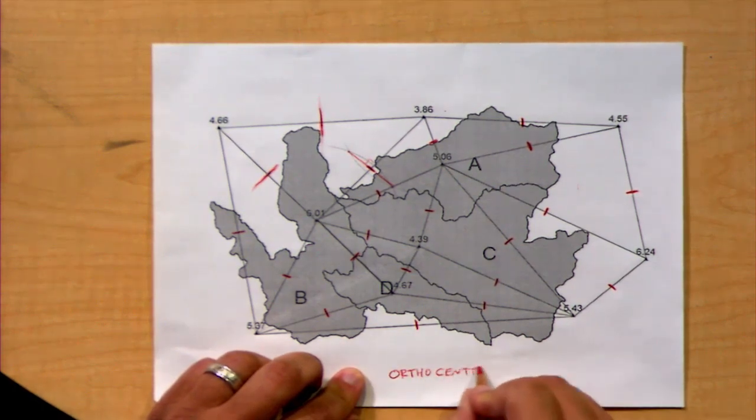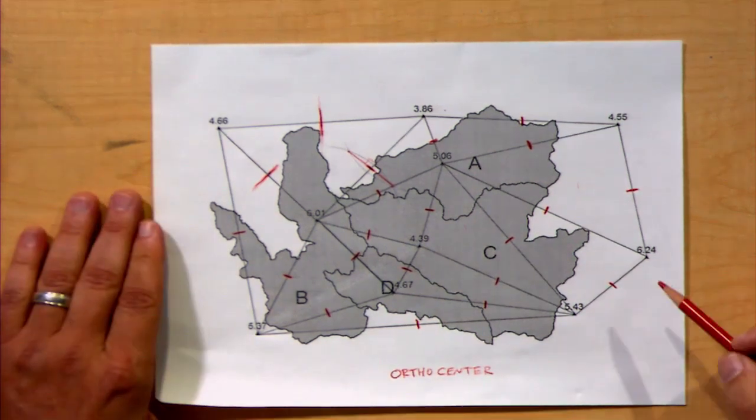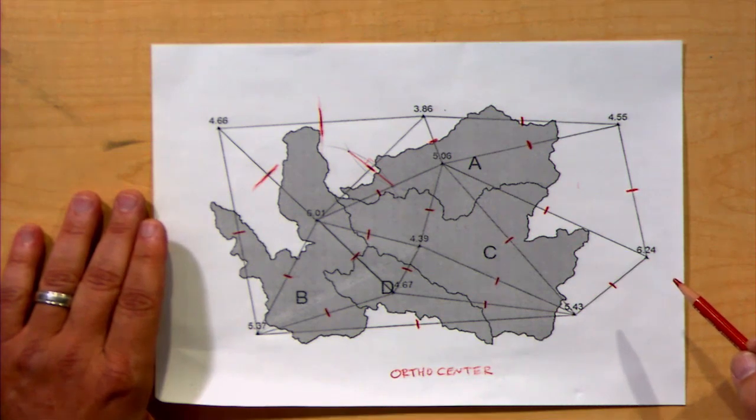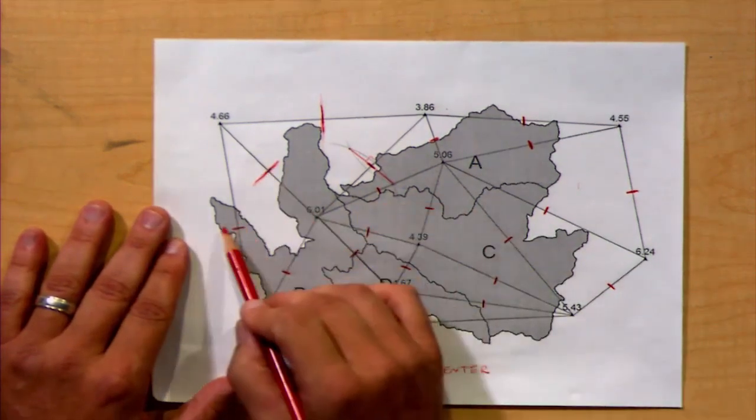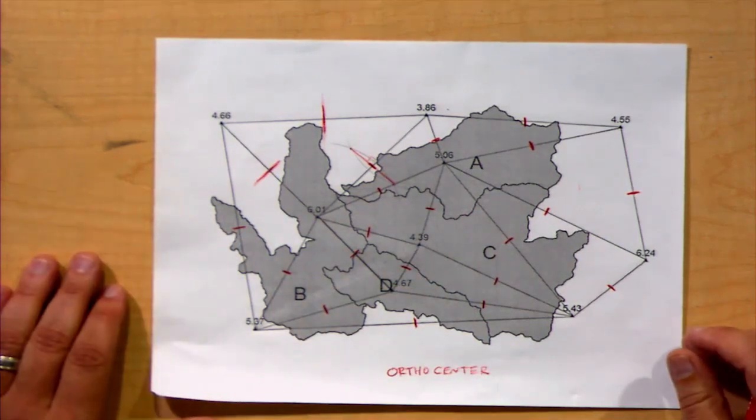The orthocenter of each triangle is the location where the lines that are perpendicular to each side of the triangle meet. And because each of these lines are perpendicular bisectors, if we extend those three, they will always meet at one point.